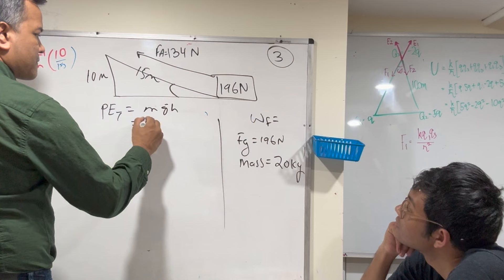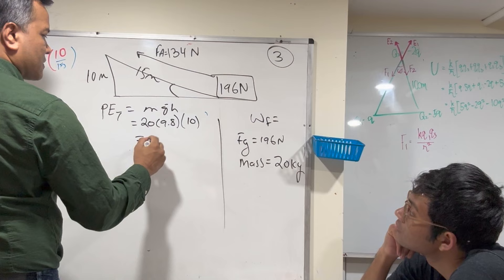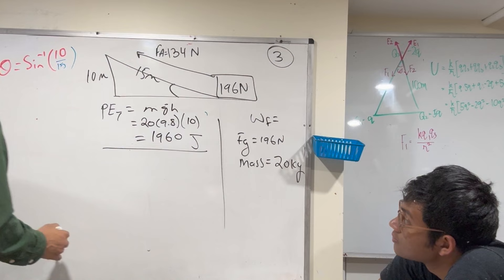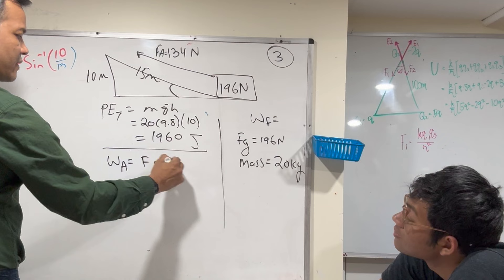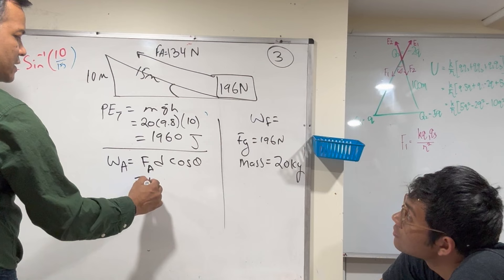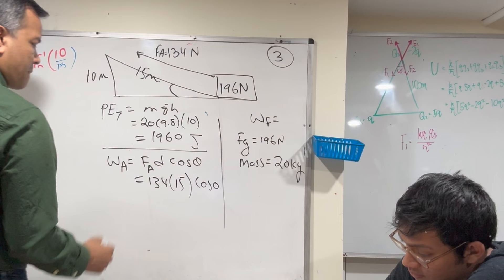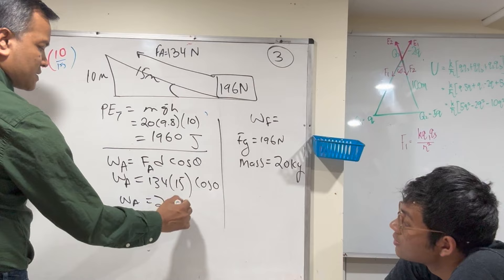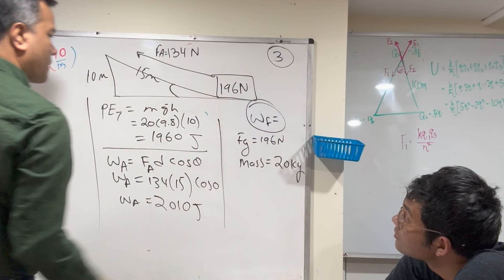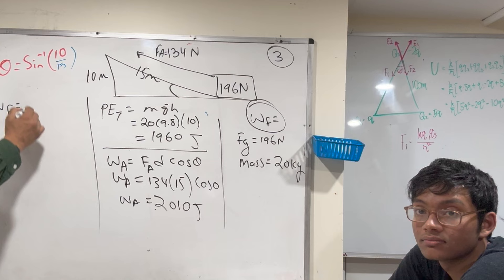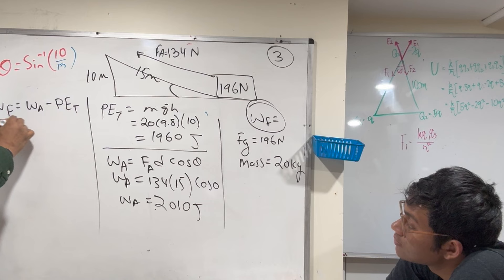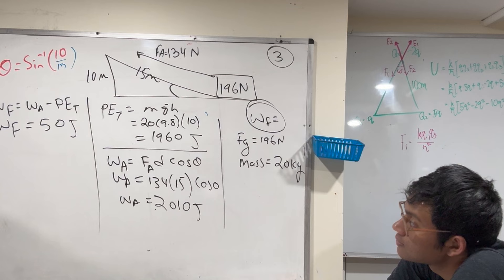The potential energy at the top is mgh = 20 × 9.8 × 10 = 1960 Joules. The work done by the applied force is F × d × cos θ = 134 × 15 × cos(0°) = 2010 Joules. So 50 Joules is lost to friction. Work done by friction equals work done by applied force minus final potential energy = 50 Joules. That's the final answer.